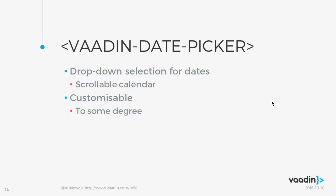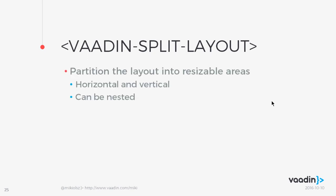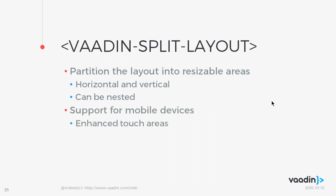Then we have Date Picker, which comes up surprisingly often in application development. It's a scrollable calendar component where you can select dates, with customizable date ranges. Then we have Split Layout, which partitions the layout into resizable sections — either horizontal or vertical — that can be nested. It has support for mobile devices, with touch-highlighted resize areas for easy swiping.